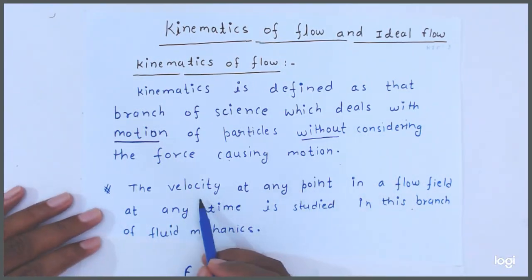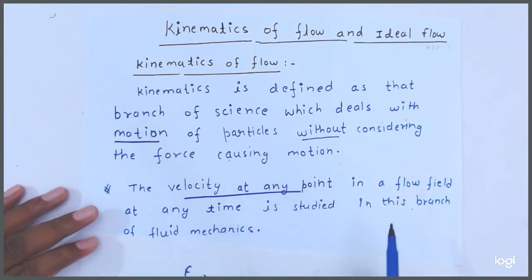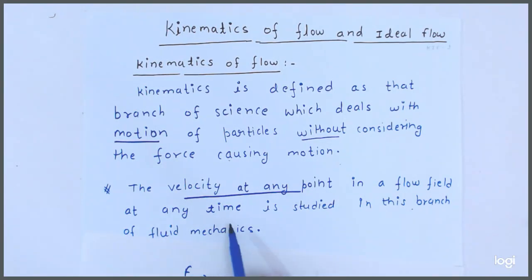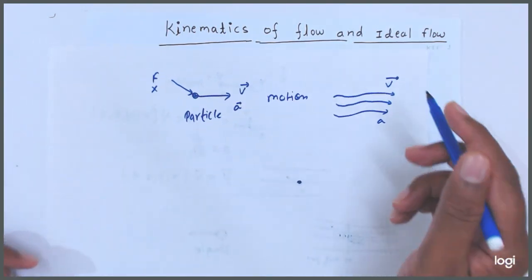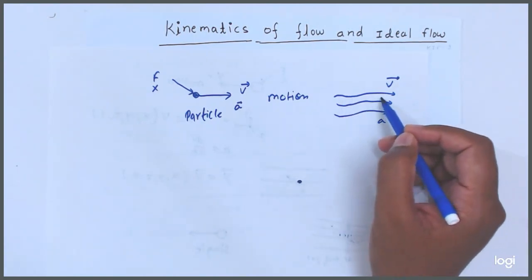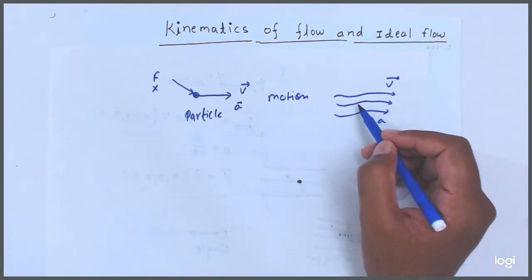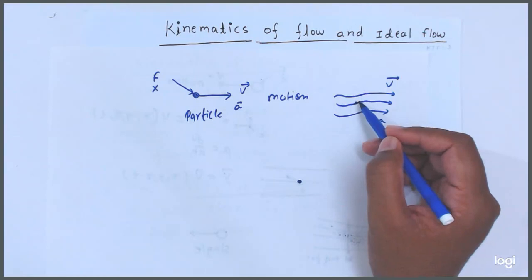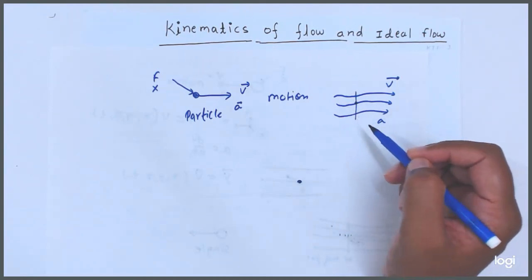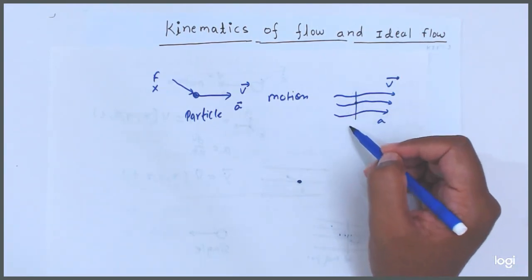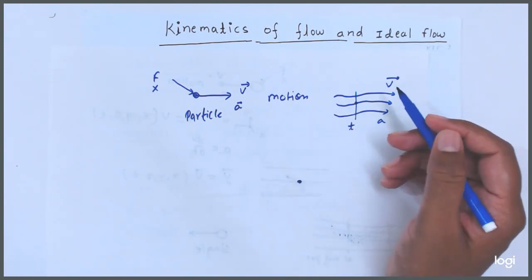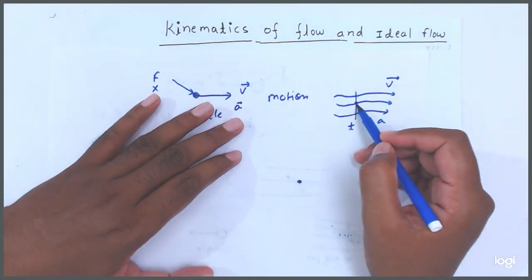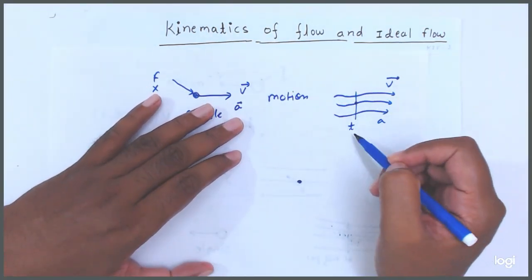The velocity at any point in flow field at any time is studied in this branch of fluid mechanics. So this is the velocity, this is the fluid flowing. Suppose this particle is there. So at any instant of time, we can consider what is the velocity at this point, at this time.